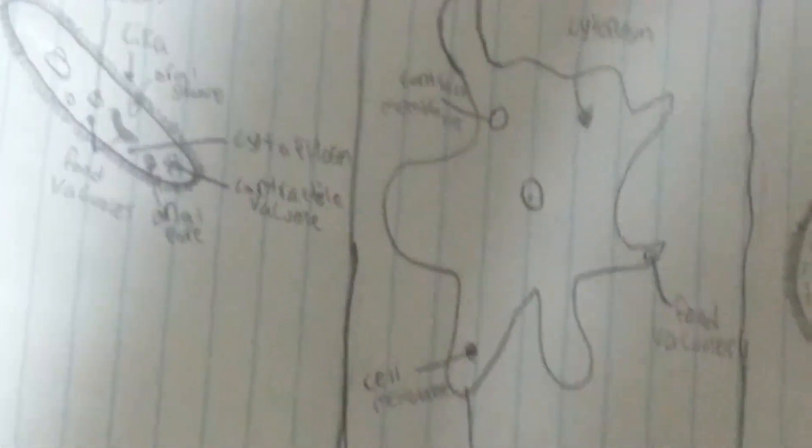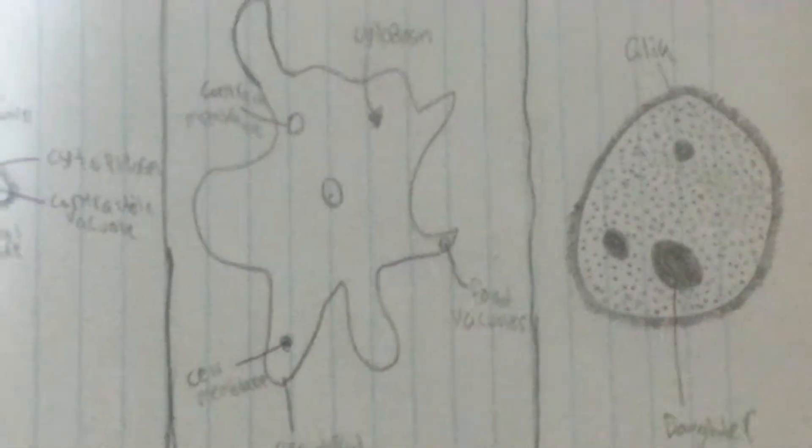Then we have the amoeba — a really big one. We have the cytoplasm, we have the contractile vacuole, we have the cell membrane, the pseudopods, which it uses to move, and then the food vacuoles. So this one moves with pseudopods, this one moves with cilia, and this one moves with flagellum — all different.